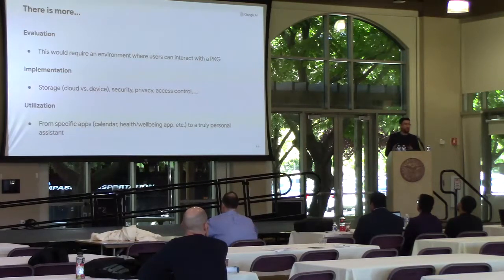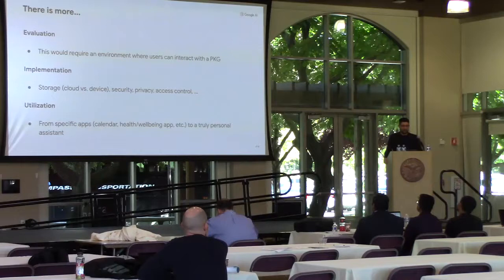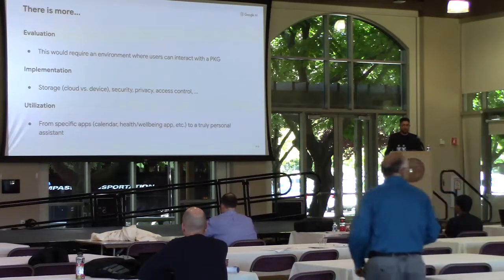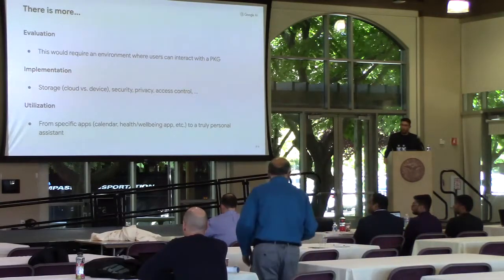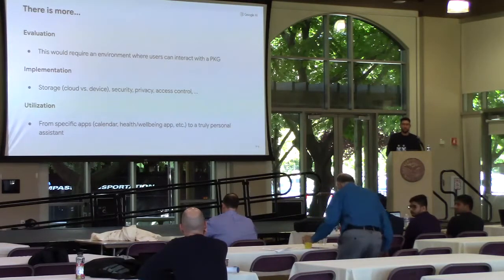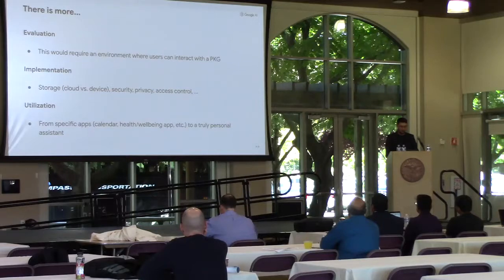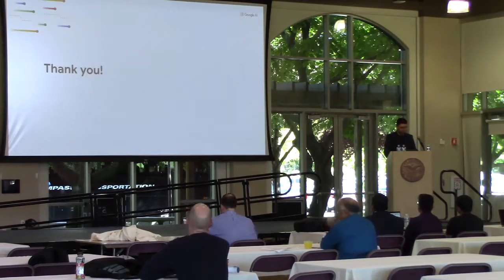There are many other open challenges. So far we have been working in an idealized and abstract setting, and implementing it brings about challenges related to where it should be stored, privacy, and how to evaluate it. I used personal assistants as an example because that is very natural, but you can think of a range of other applications that can benefit from such a personal knowledge graph. Thank you.